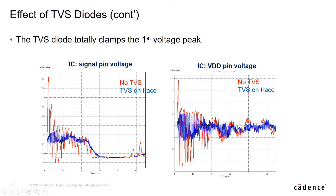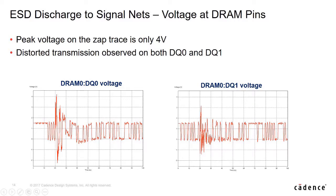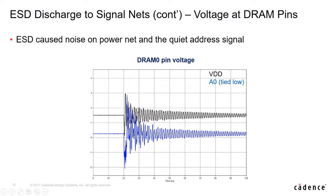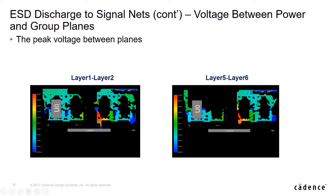Red traces represent no TVS on board, but blue traces do. Now let's take a look at what happens if the ESD gun zaps on the signal net. We can see that part of the bit streams are destroyed by the ESD voltage. This means that the real device will have operation errors during the time ESD happens. At the same time, ESD noise on the signal net couples to power nets and other signals, which can also cause operation errors to those signals.